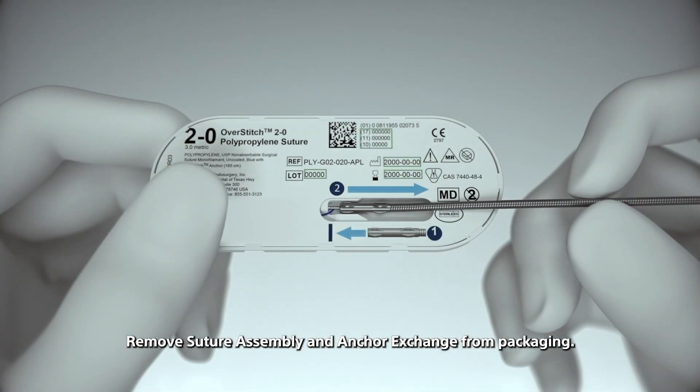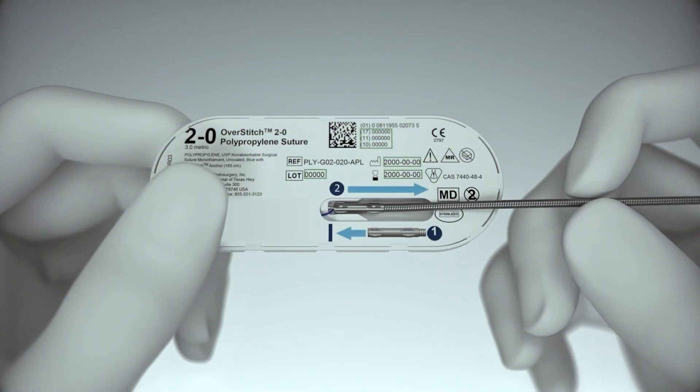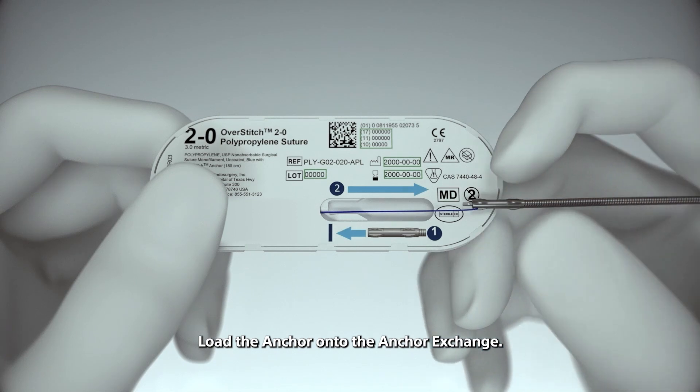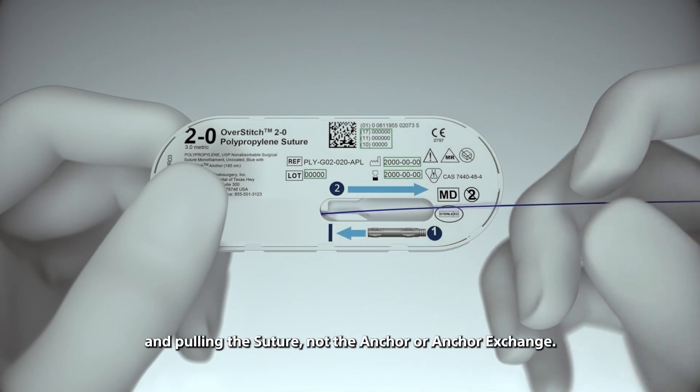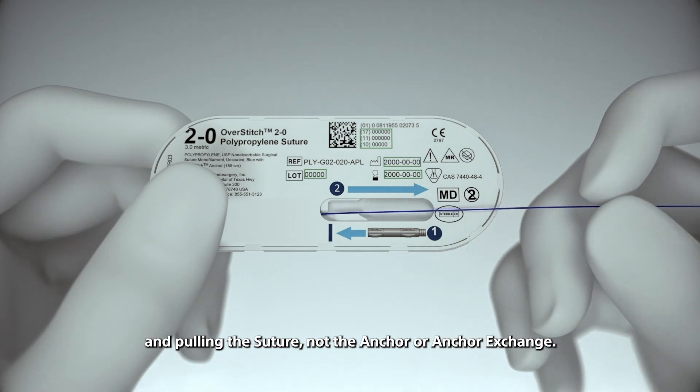Remove suture assembly and anchor exchange from packaging. Load the anchor onto the anchor exchange. Remove suture from sutured cartridge by holding and pulling the suture, not the anchor or anchor exchange.